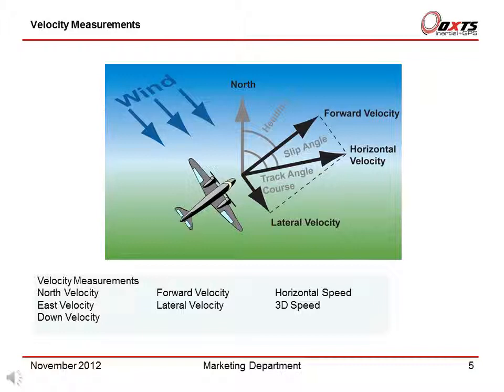Also the horizontal speed and the 3D speed. Velocity can be measured in two ways: north/east like GPS, or forward/lateral like optical speed sensors. The RT measures true heading, so it is possible to separate forward velocity from lateral velocity to give horizontal velocity. In the example shown, the aircraft is flying straight into crosswind; the track or course over ground the aircraft takes is not the same as heading because of the crosswind.